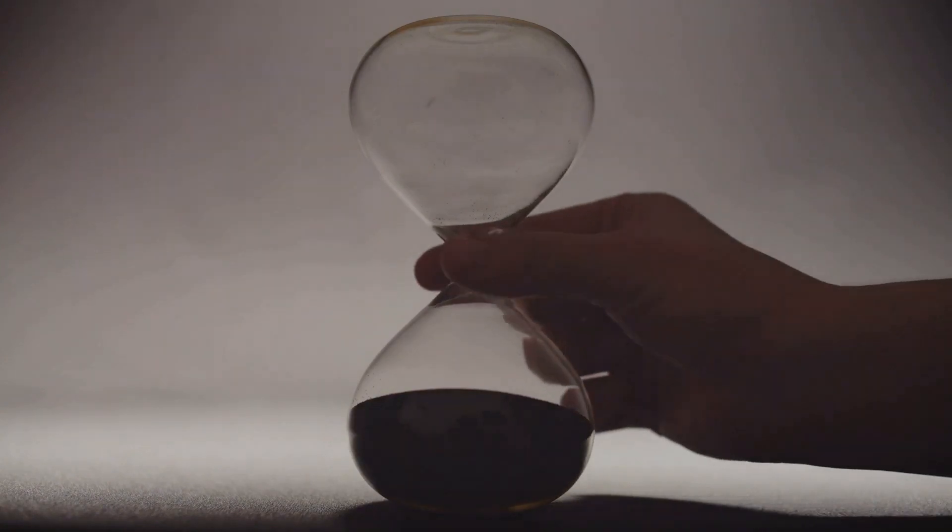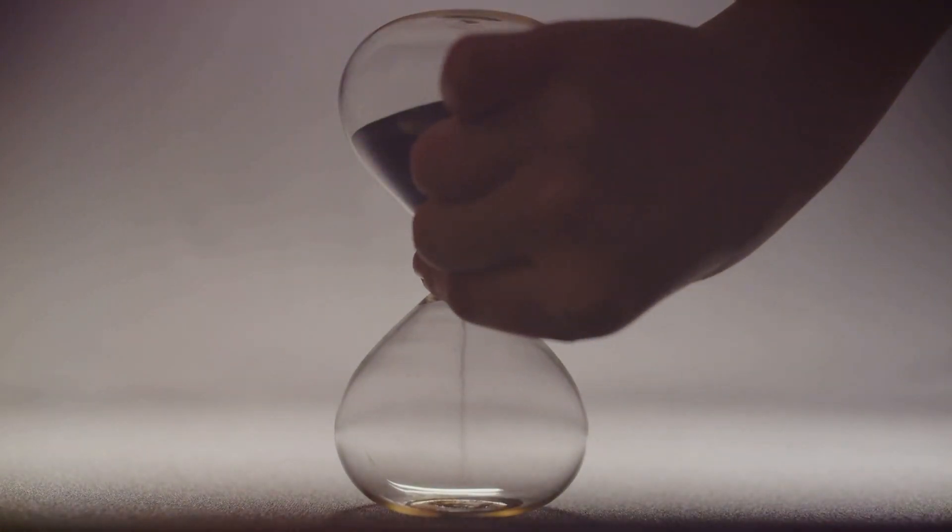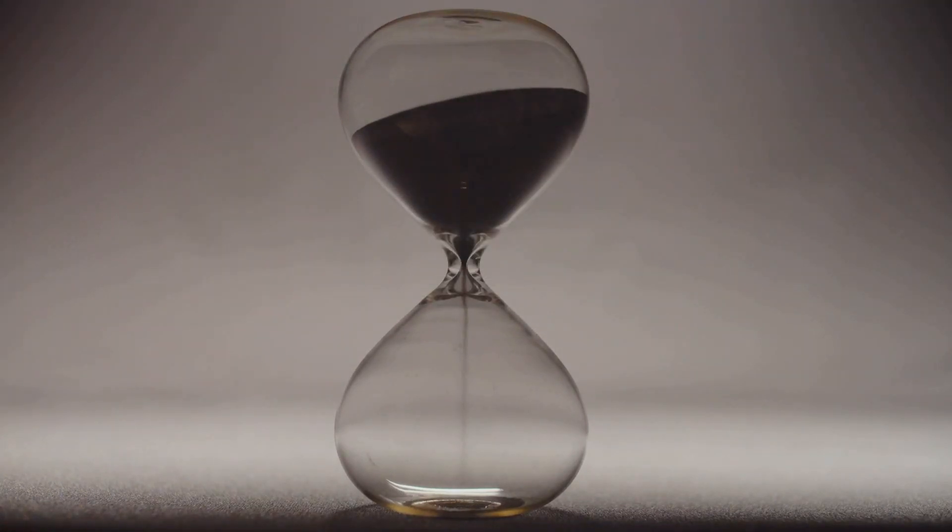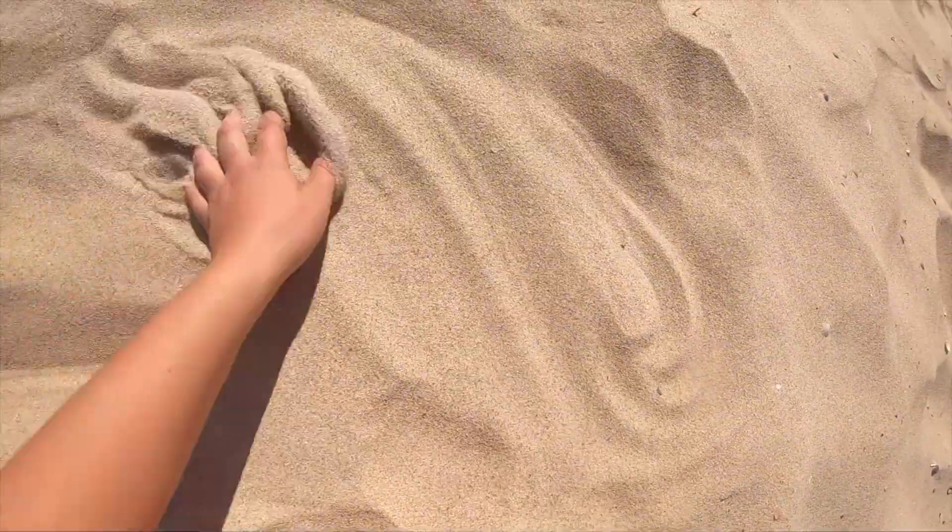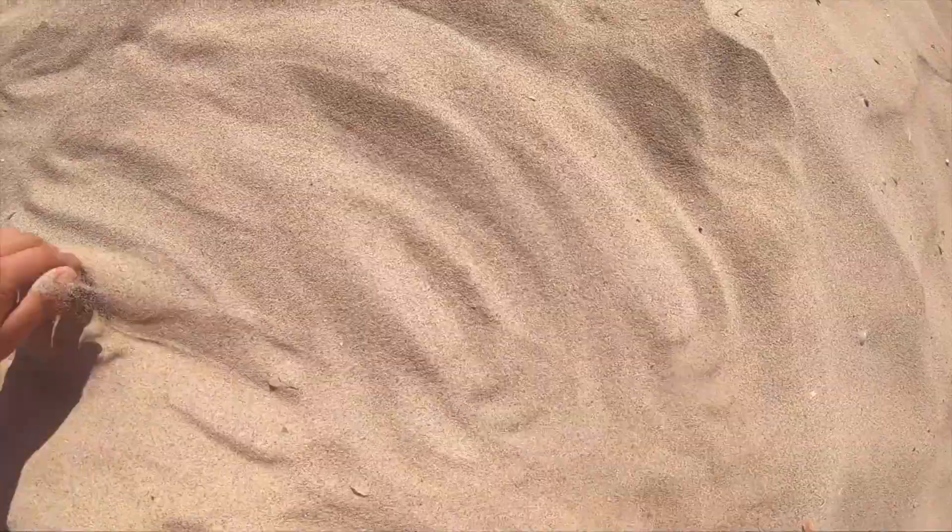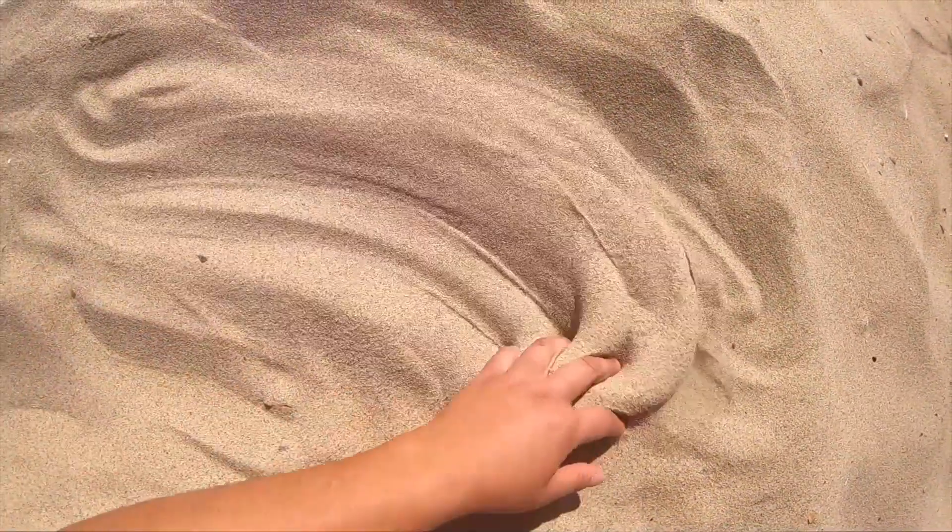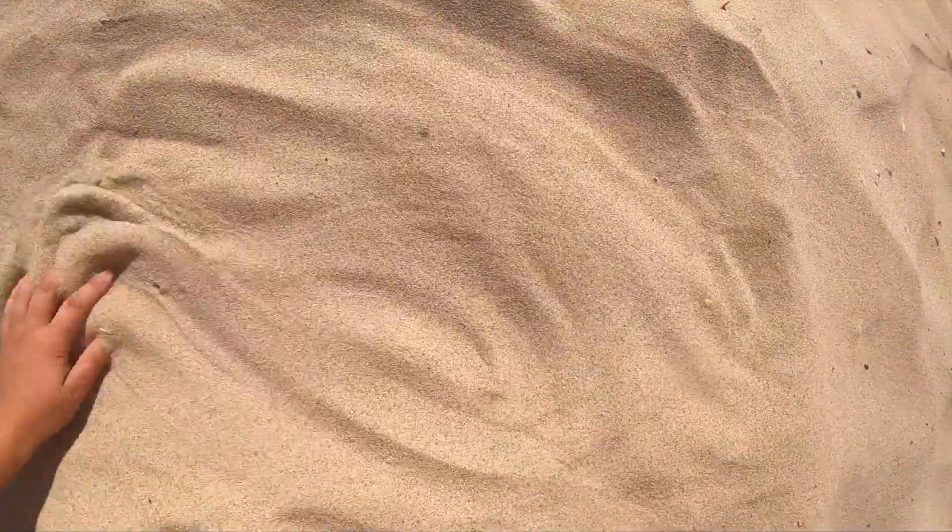But where does information come into this? Information is a way of describing order. If you know exactly where every grain of sand is, you have a lot of information. But as the sand pile gets more disordered, you lose that information. It spreads out and becomes less ordered.